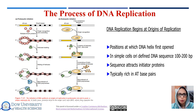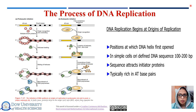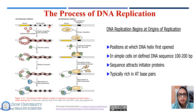Assembly of the replisome in both prokaryotes and eukaryotes is an orderly process beginning at precise sites on the chromosome called origins, taking place only at certain times in the life of a cell. E. coli replication begins from a fixed origin called oriC and proceeds in both directions, continuing until the forks merge. The first step is the binding of a protein called DnaA to a specific 13 base pair sequence called the DnaA box, repeated 5 times in oriC.